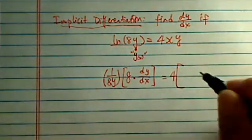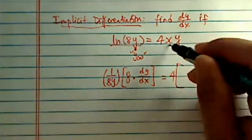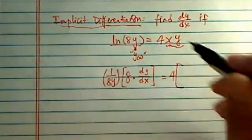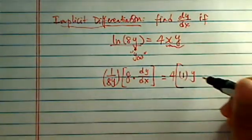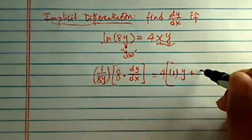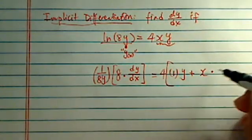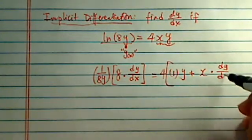is equal to 4, and on this side I'm going to use product rule. Derivative of the first one, which is 1, leave the second one alone, plus leave the first one alone, times derivative of the second one.